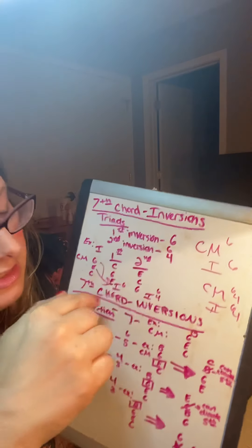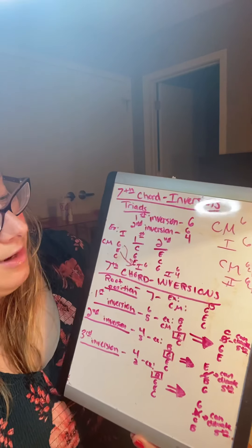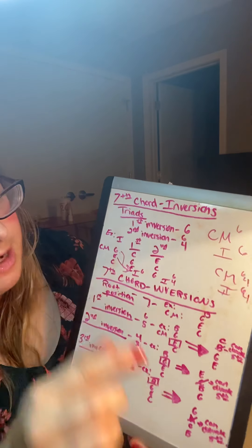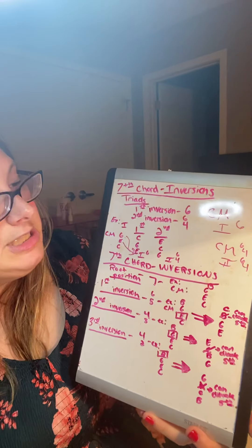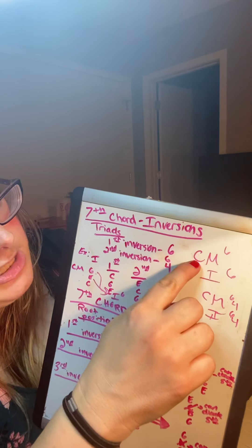So for instance, what I just did, C, E, G, is a regular triad, C major, right? If I were to put an E, G, C and make E the bottom, then it'd be C major six, okay?